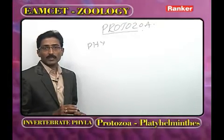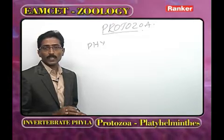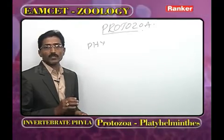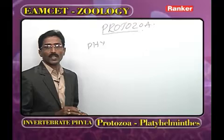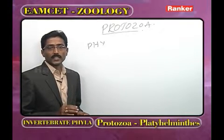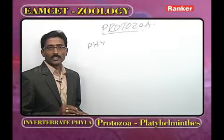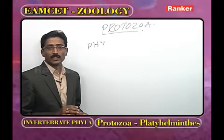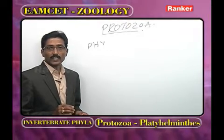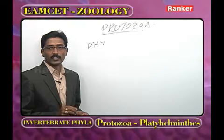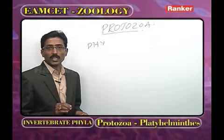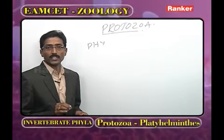As we observe the remaining characters of Protozoa, locomotion is brought by organelles: pseudopodia, flagella, cilia, and myonemes. Of these, pseudopodia are cellular extensions and are purely temporary structures.